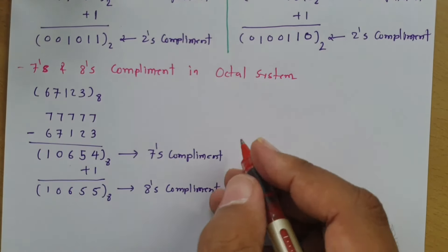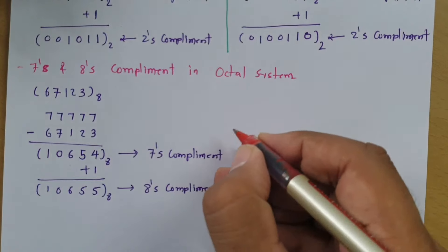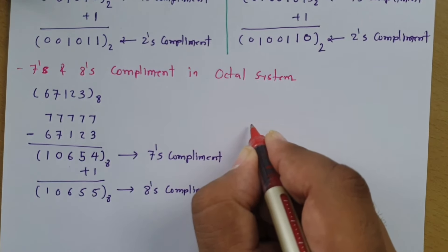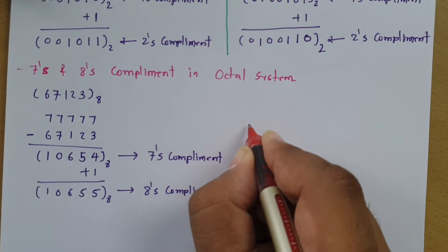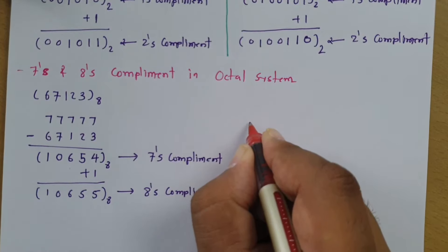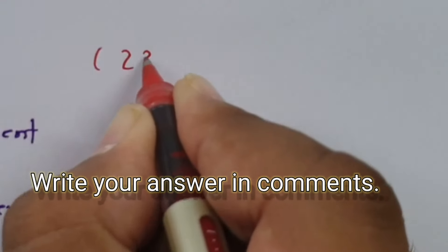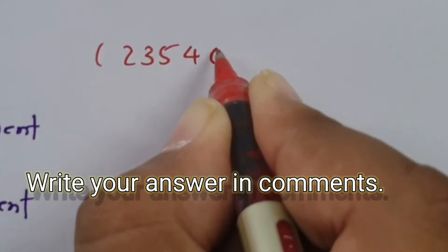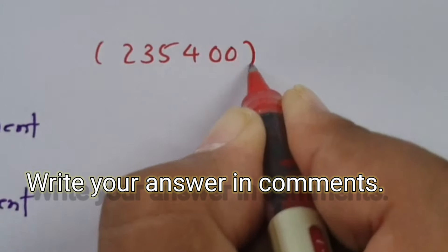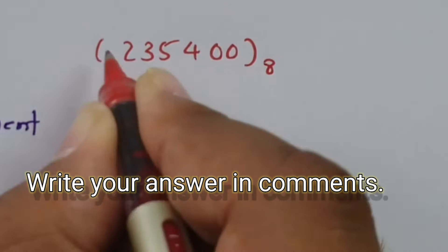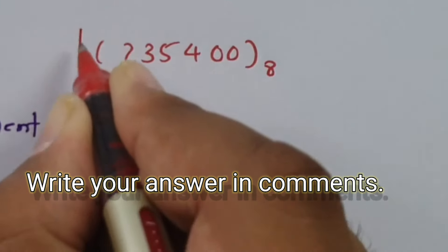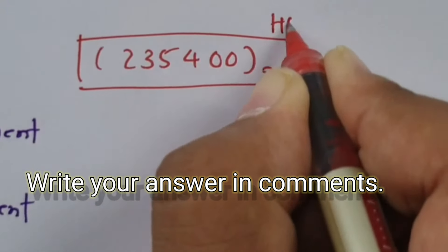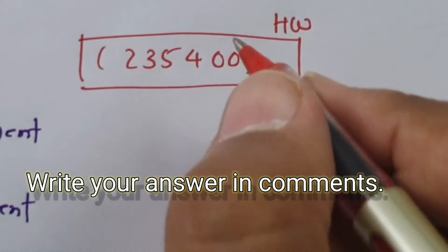I'll give you one self-study problem — write your answer in comments and I will get back to you if any mistake is there. The octal number is 2 3 5 4 0 0. Convert this into 7's and 8's complement.